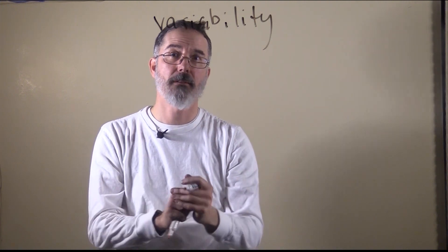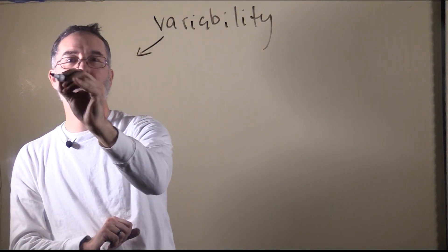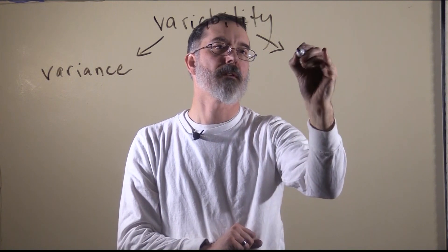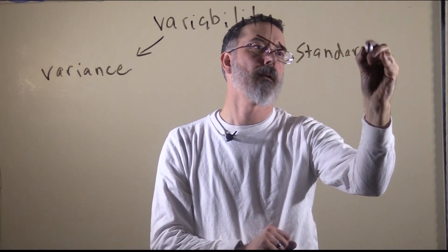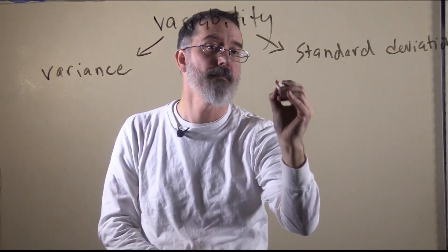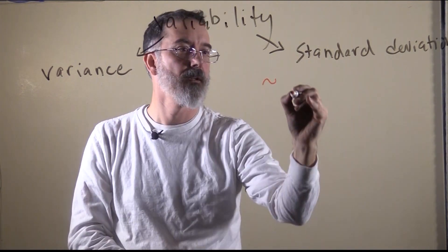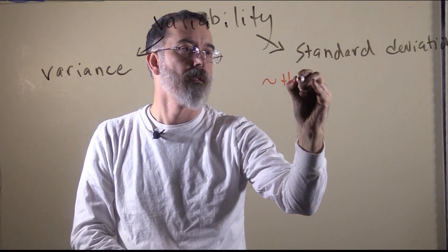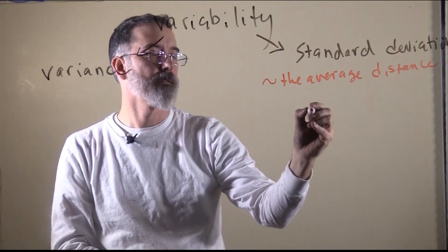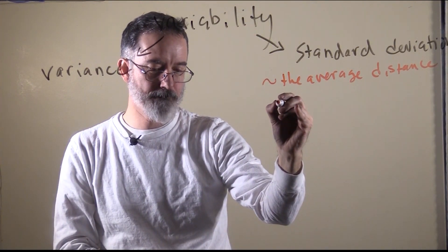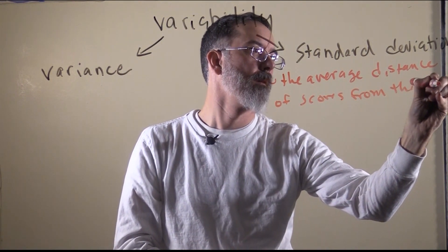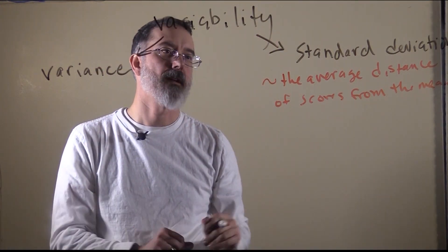There are two primary measures of variability. One is called the variance, the other one is called a standard deviation. A standard deviation is approximately the average distance of scores from the mean. It is not exactly that — conceptually, that is kind of what it is.